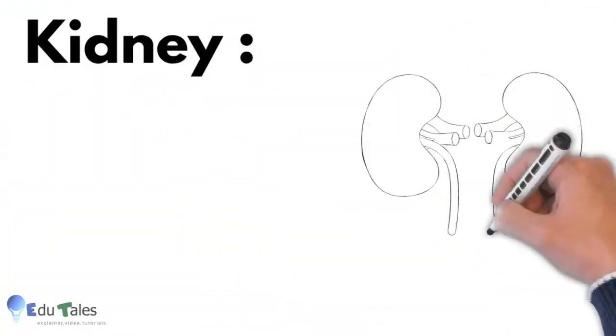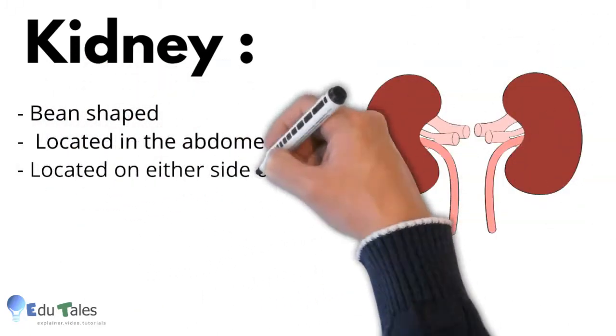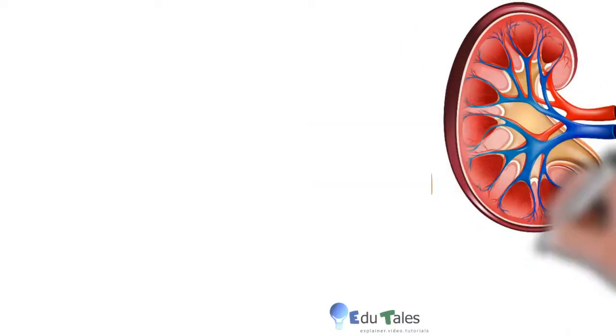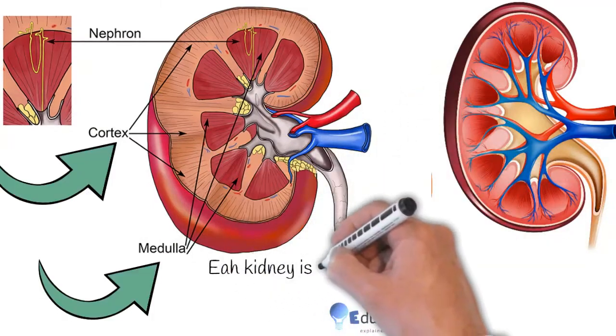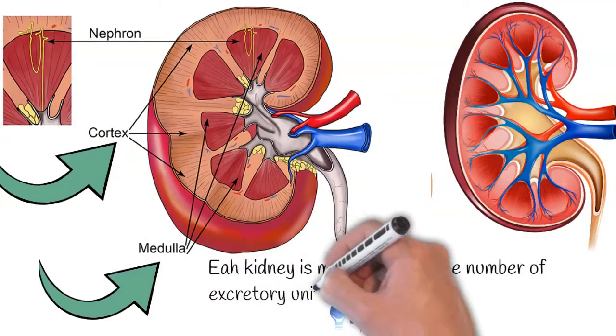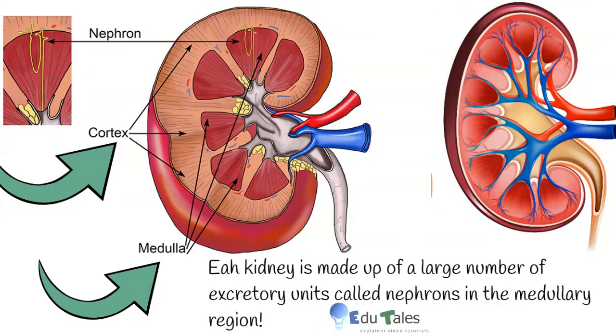So let us see in detail the main excretory organ of the body, that is kidney. Kidney is bean-shaped and is located in the abdomen on either side of the backbone. If we cut open a kidney, the following diagram is observed. There is one outer structure which is cortex and one inner structure which is medulla. Each kidney is made up of large number of excretory units called nephrons in the medullary region. Here only one nephron is shown for easy understanding.